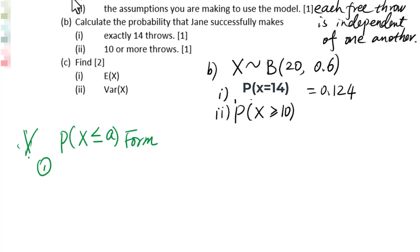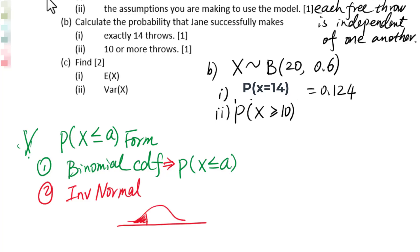First, binomial CDF. We can only figure out probability X less than or equal to A. Second situation for inverse normal distribution. The area under the curve means probability. Probability of X less than or equal to A is given. Therefore, probability of X greater than or equal to 10, we have to change into 1 minus probability of X less than or equal to...